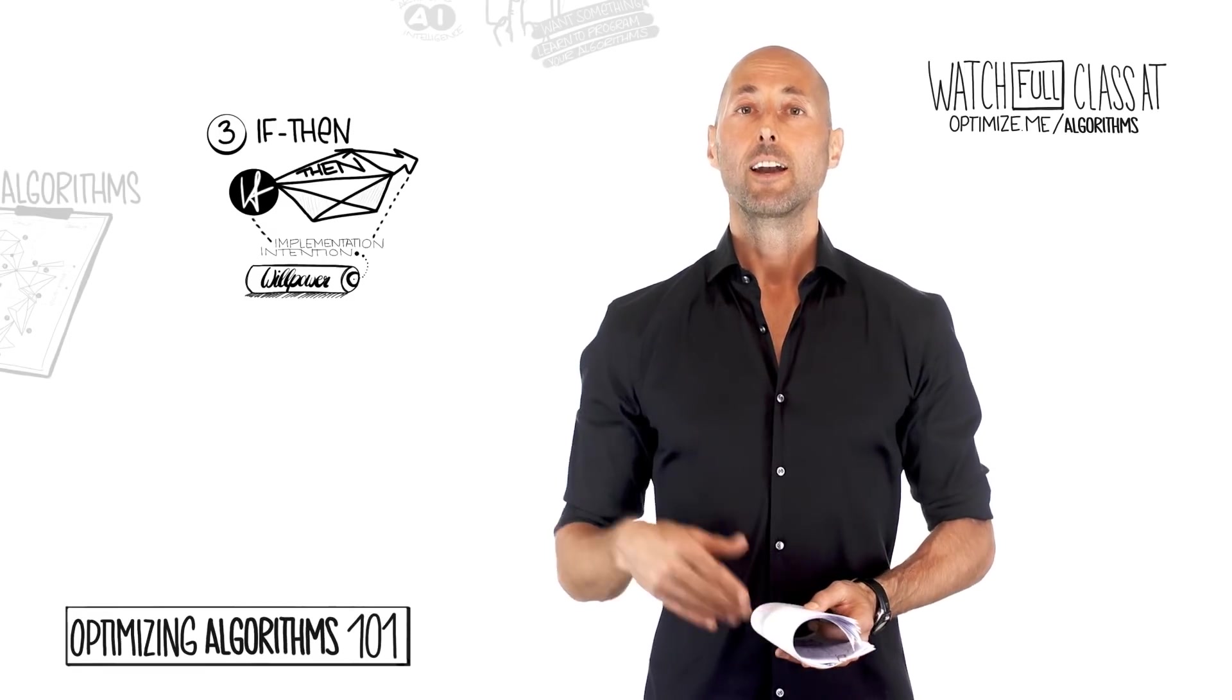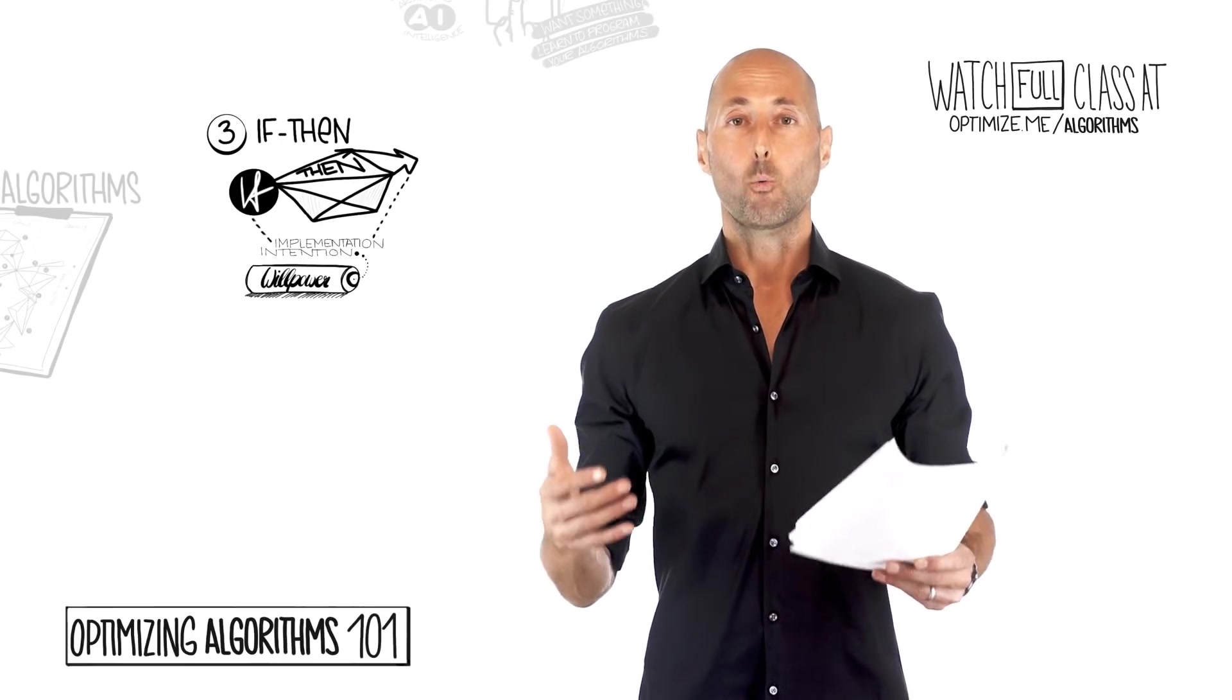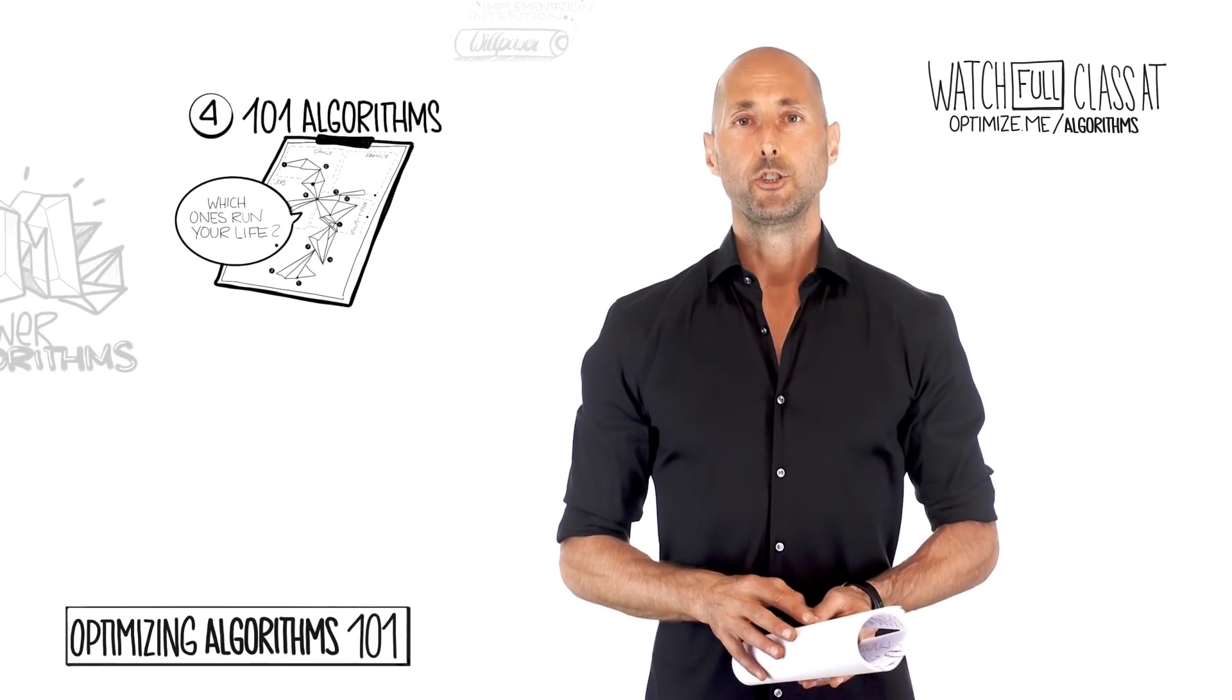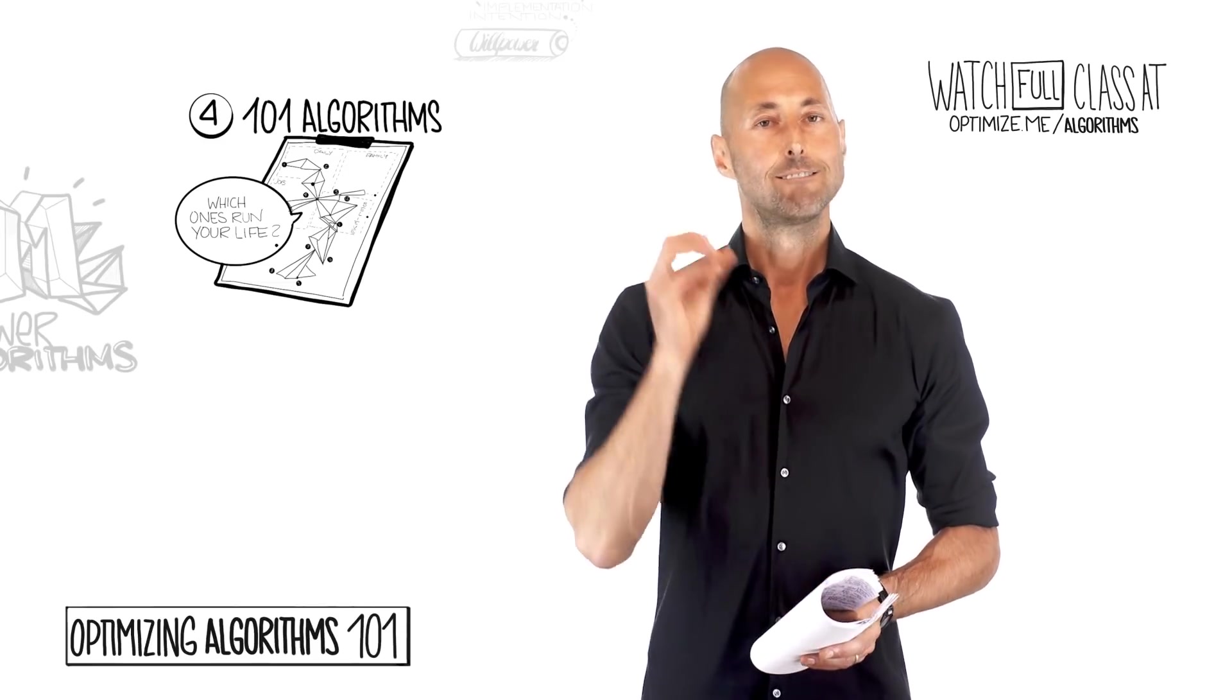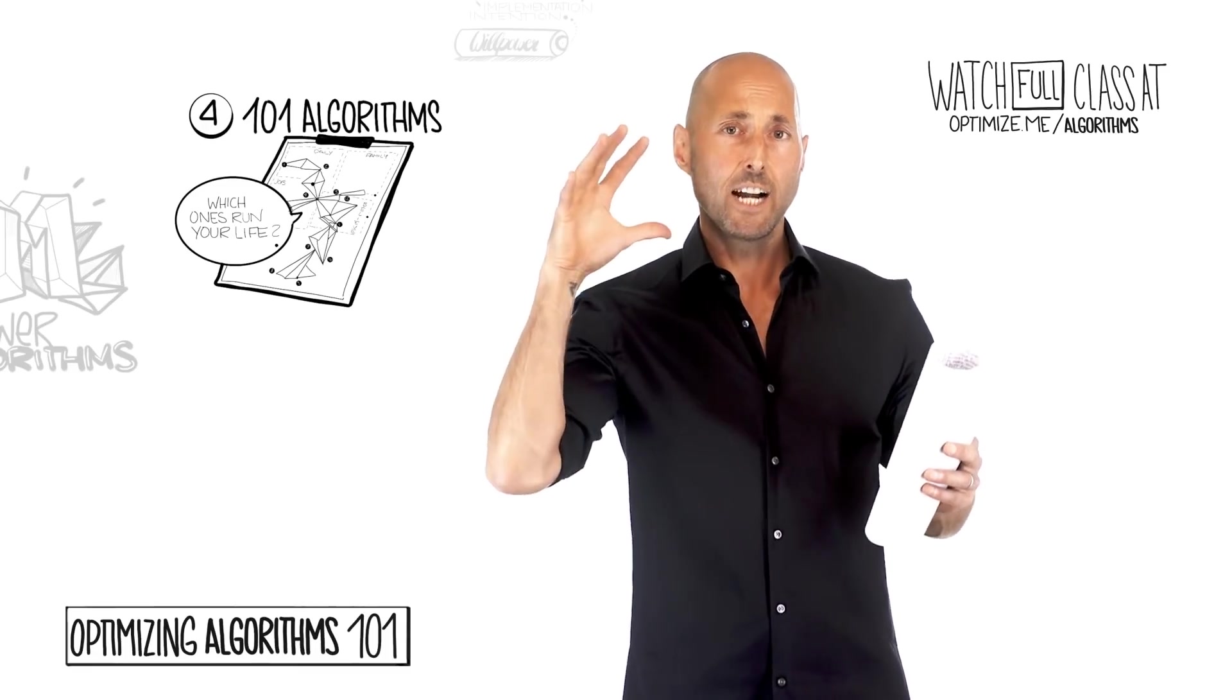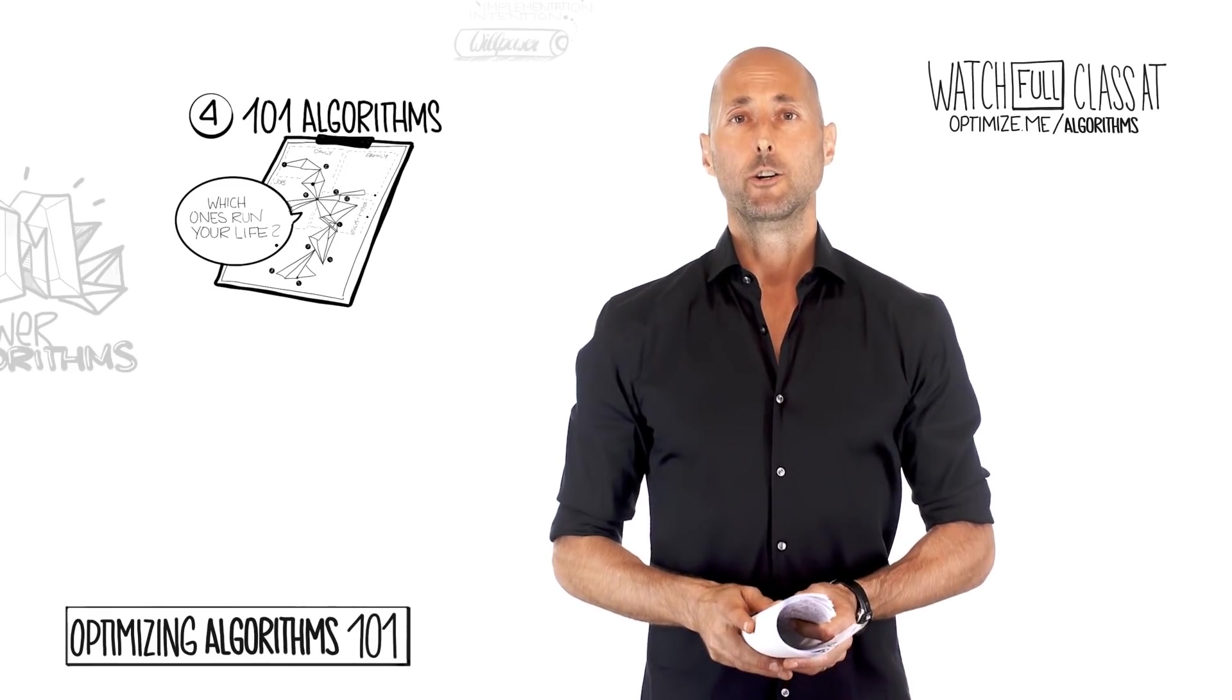It is the way you use your finite willpower wisely to install habits that run on autopilot. If-then implementations. That's nothing more than an algorithm. So, now that we've established the high-level why algorithms matter, we will then move on to the fourth big idea, which is 101 algorithms.